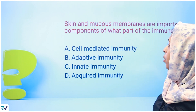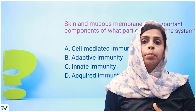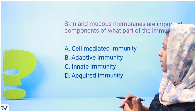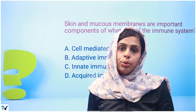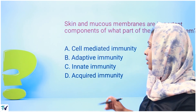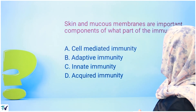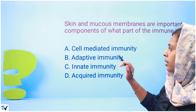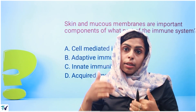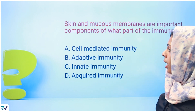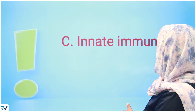Next question: skin and mucus membranes are important components of what part of the immune system? The skin is the first barrier and first response mechanism. Skin, mucus, hair — all are part of the innate immune system. The answer is innate immunity, which is also contrasted with cell-mediated immunity and adaptive immunity.